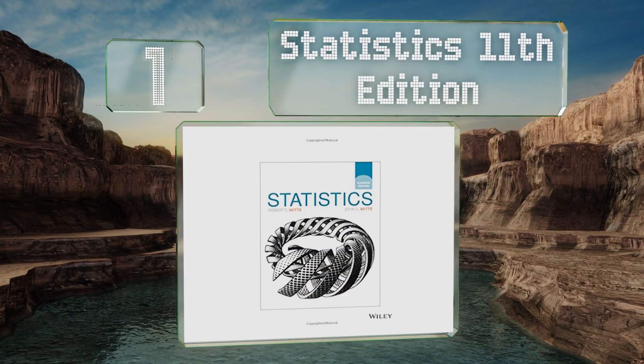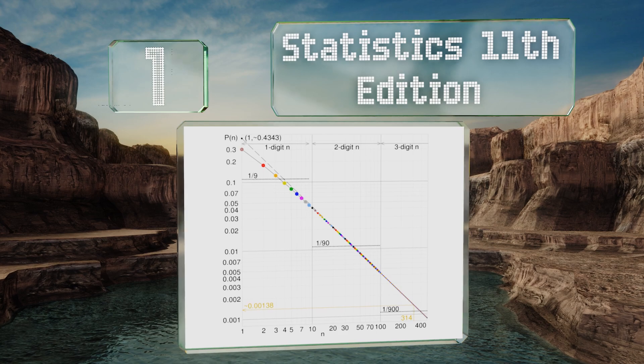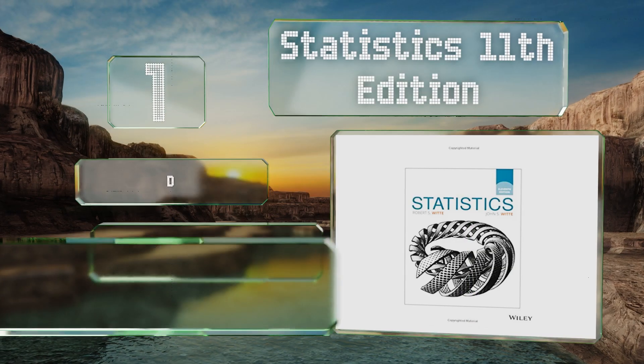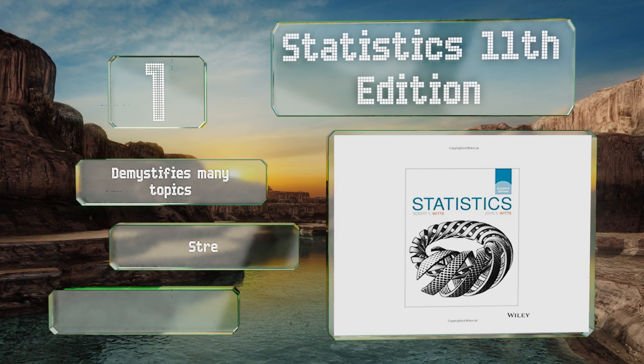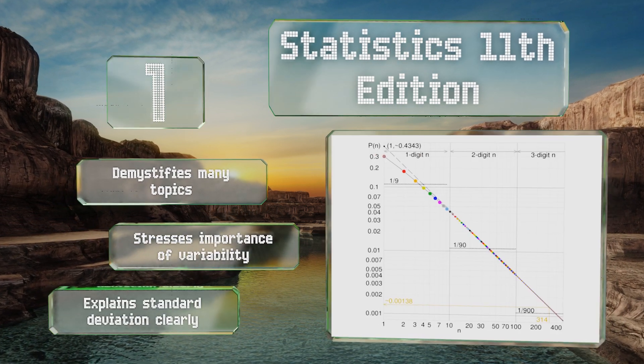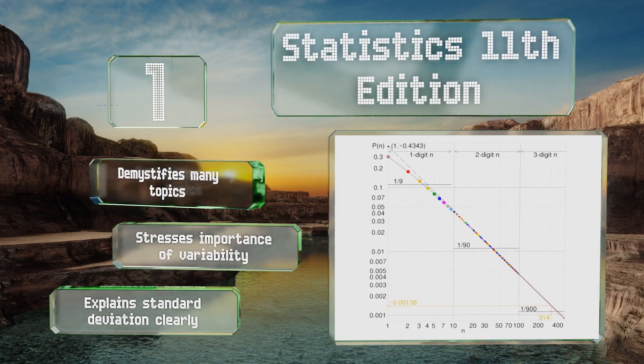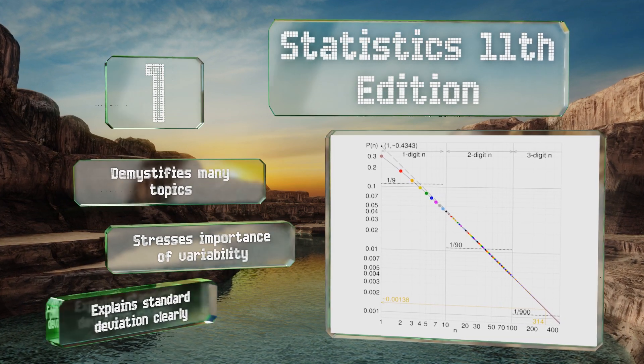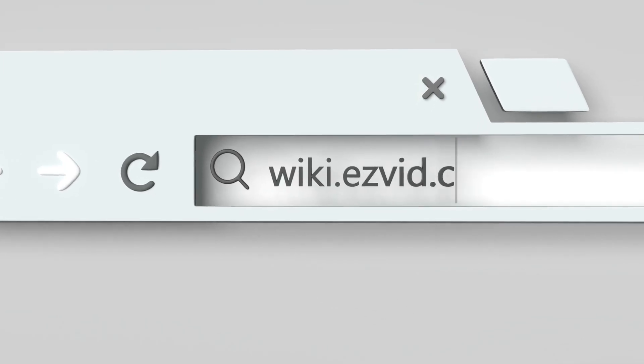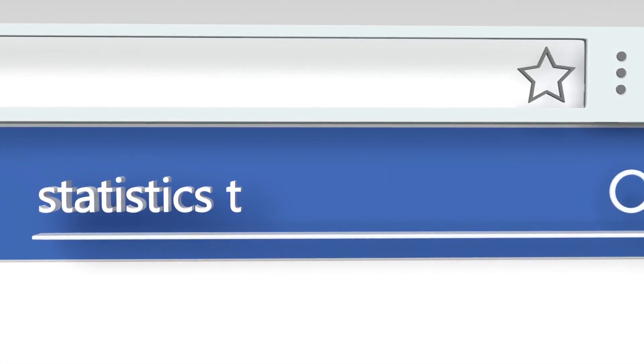And coming in at number one on our list, widely considered one of the best introductory texts out there, the Weiss Statistics 11th Edition draws on 40 years of the author's experiences to offer students and professionals a concise and methodical approach to learning essential procedures. It demystifies many topics and stresses the importance of variability. It explains standard deviation clearly.